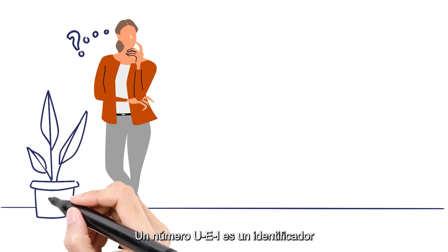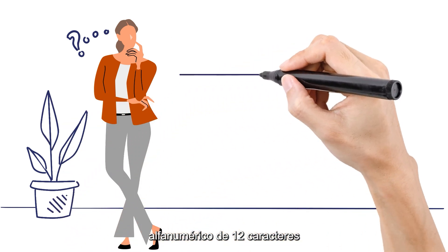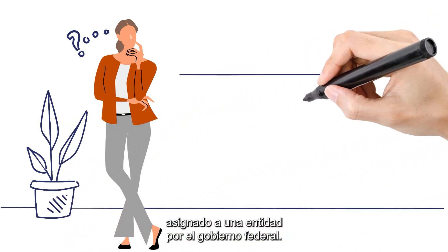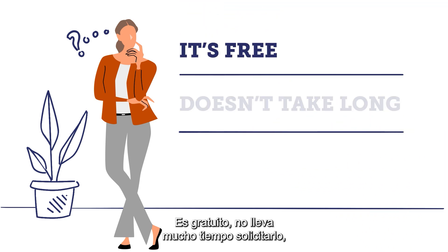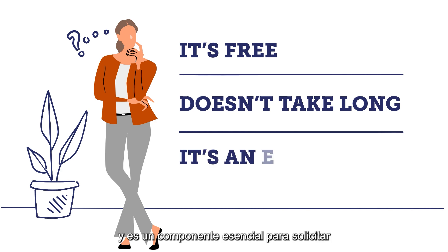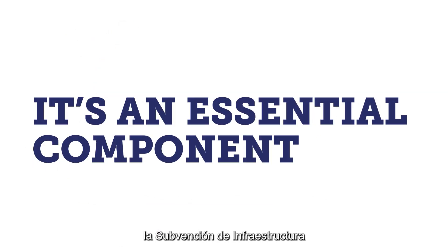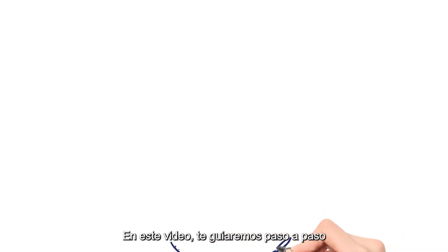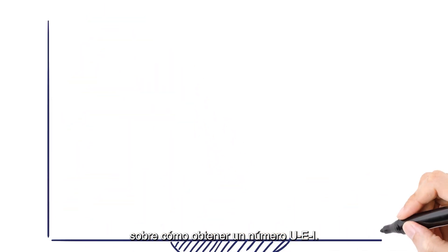A UEI number is a 12-character alphanumeric ID assigned to an entity by the federal government. It's free, doesn't take long to apply, and is an essential component for applying for the Nonprofit Infrastructure Grant. In this video, we will walk you through how to obtain a UEI number.